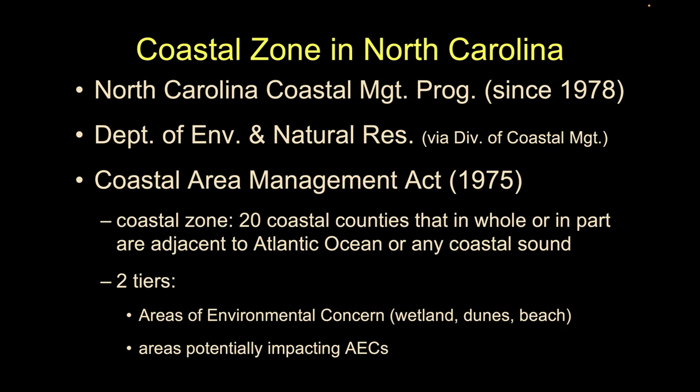Let's look at North Carolina. Their definition of the coastal zone was first codified in 1978 under the North Carolina Coastal Management Program, run by another state agency. Their coastal zone is defined as the 20 counties that in whole or in part touch the Atlantic Ocean or any coastal sound — an embayment coming in. For management purposes, they have two tiers: one is an Area of Environmental Concern (AEC), which would be stuff most immediately associated with a coast — an estuary, a dune system, a beach. And then there are areas within that zone that aren't those things but might impact those things — areas potentially impacting the AECs.